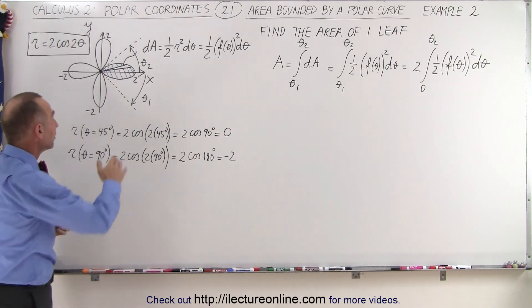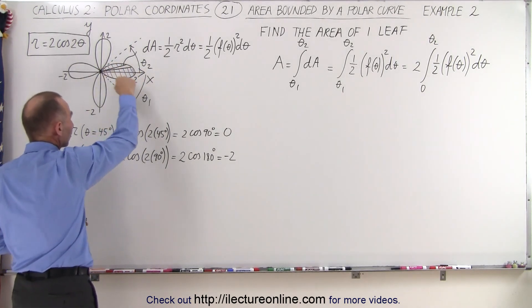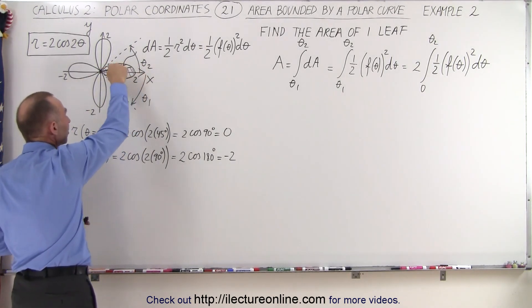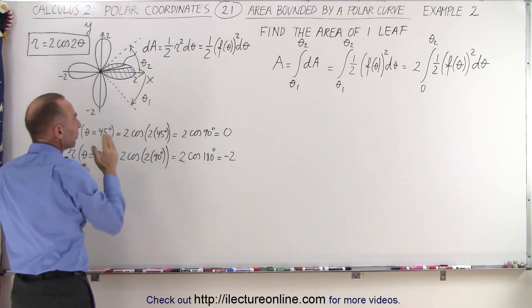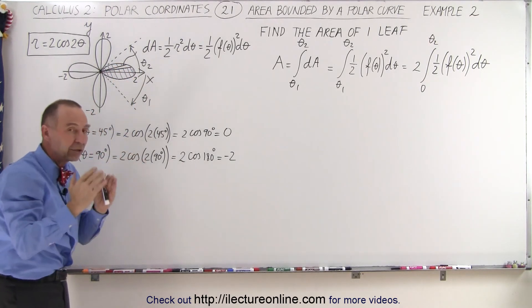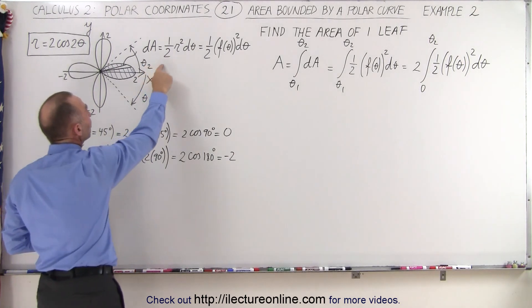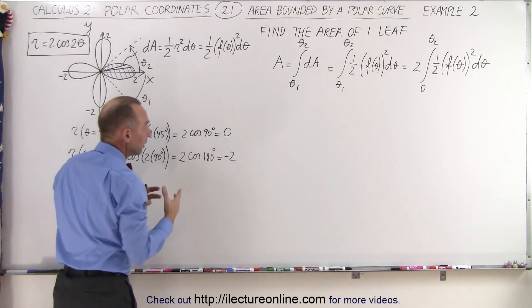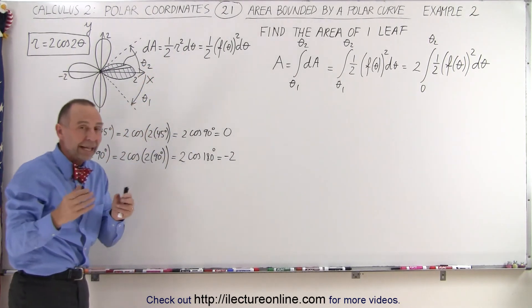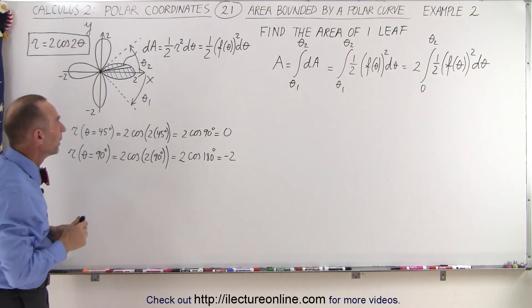We can draw the single leaf right here. Notice that we're just going to find the area of this leaf. We're going to indicate a small little area element, which is triangular shaped, so that dA is therefore equal to one half r squared times d theta, which is basically the area of that small little triangle.